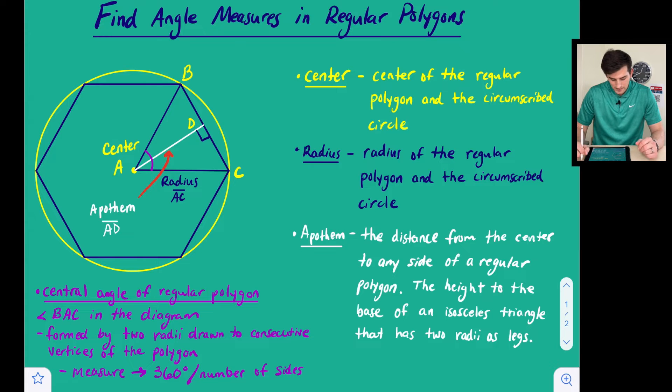One thing to note about the apothem is it's going to bisect our central angle here, and that brings us to central angle. In purple down here at the bottom, our central angle of our regular polygon in this diagram would be angle BAC. It is formed by two radii that are drawn to two consecutive vertices of the polygon. We can find the measure of the central angle by taking 360 degrees and dividing it by the number of sides of our polygon.